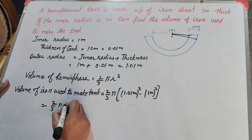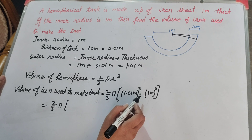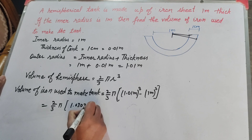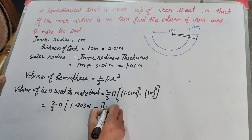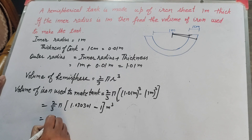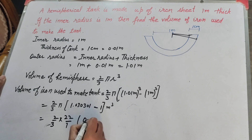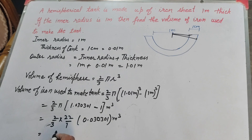We calculate (1.01)³: 1.01 multiplied by 1.01 multiplied by 1.01 gives 1.030301. So the expression becomes (2/3)π times (1.030301 minus 1), which equals (2/3)π times 0.030301. Using π = 22/7, this gives 44/21 times 0.030301 meter³.